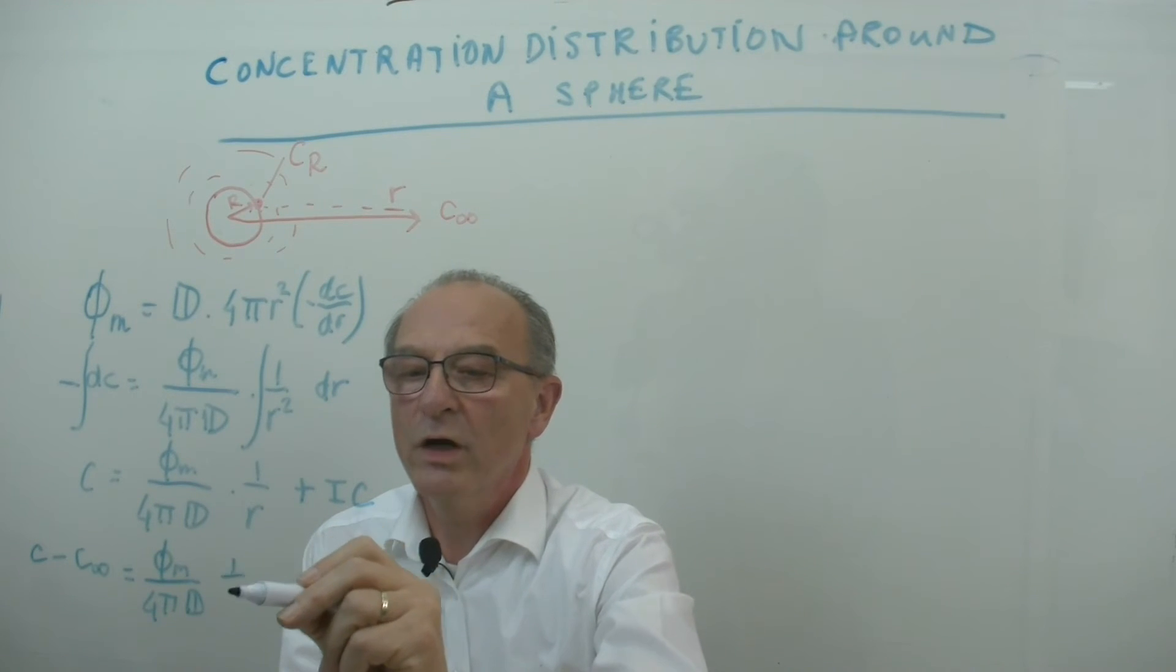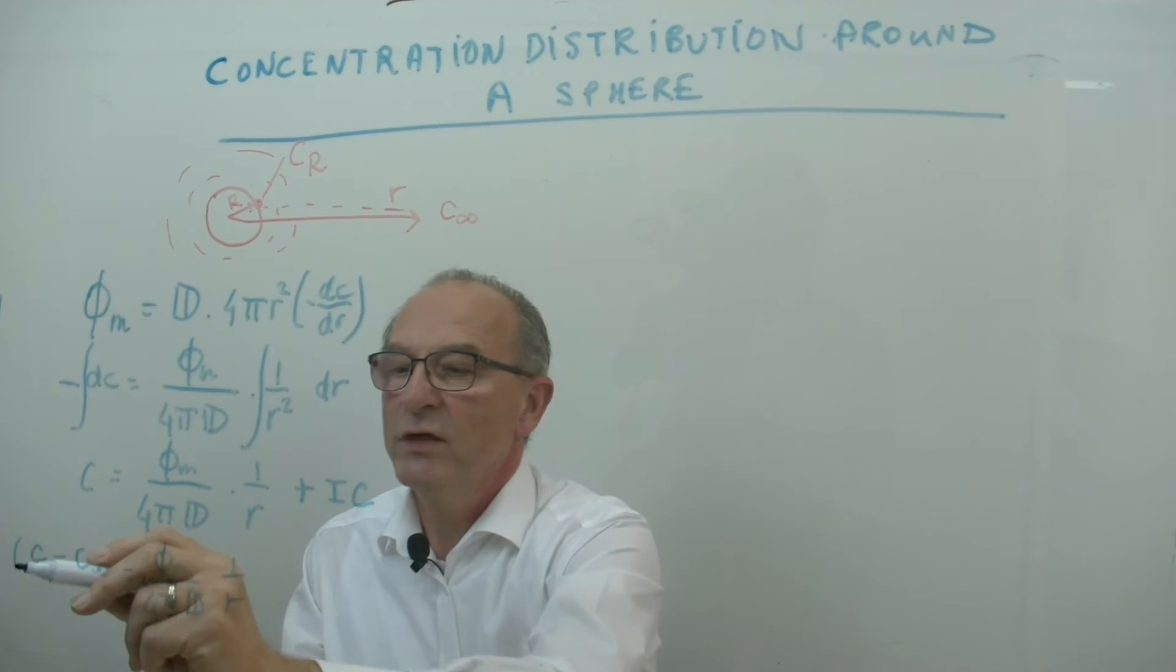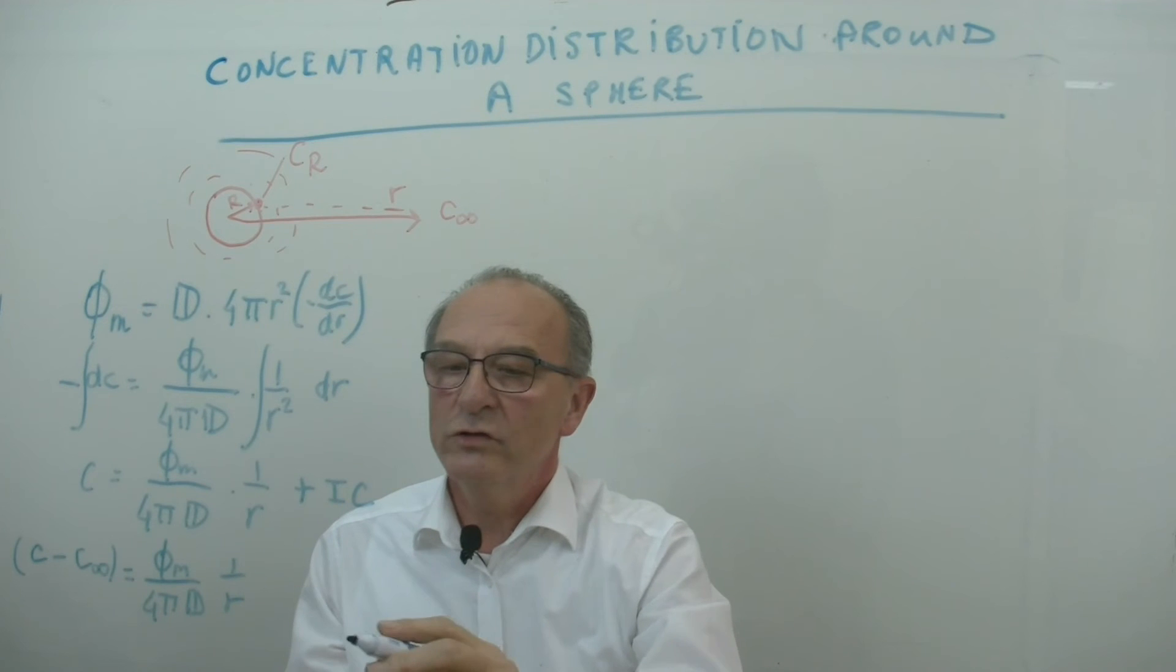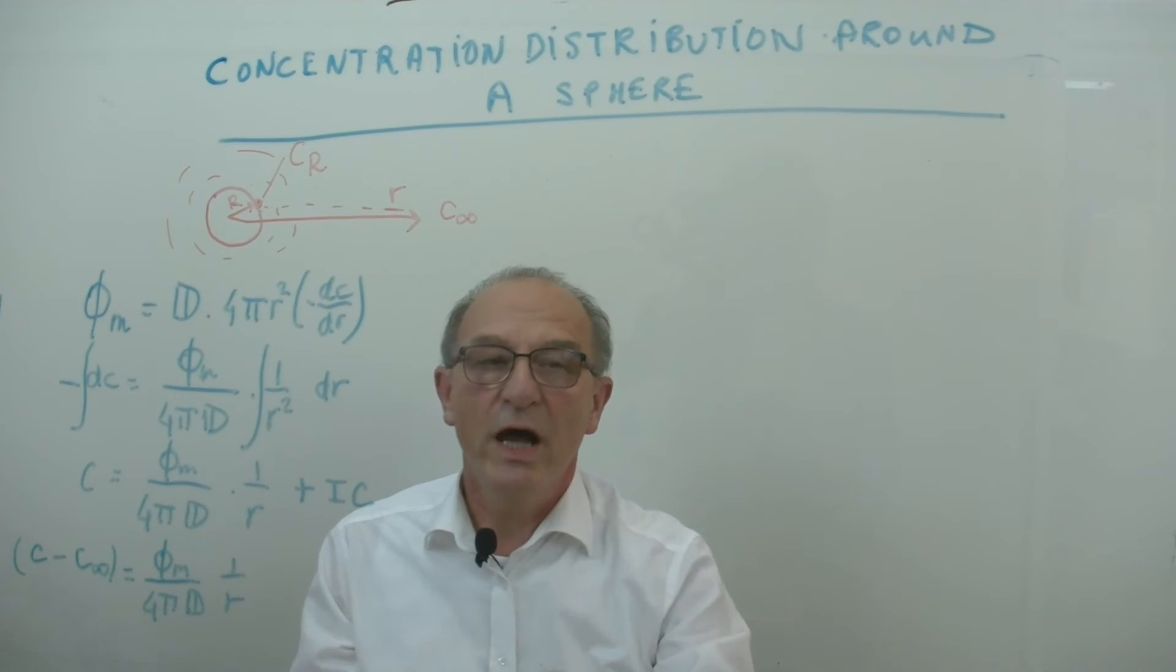And you see that we have now a concentration distribution which shows that if R, the radius becomes, it drops down.